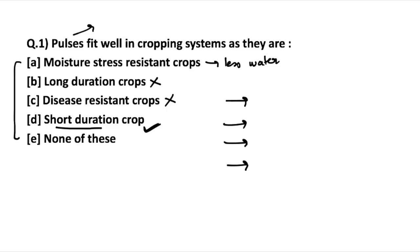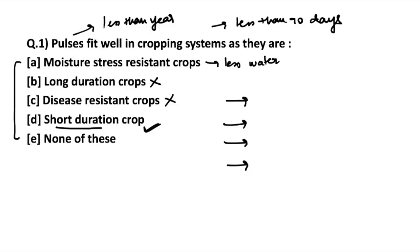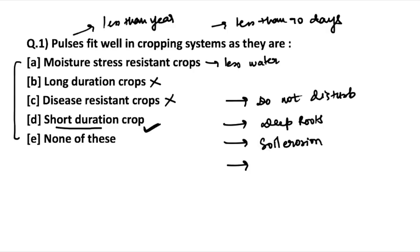What are short duration crops? Basically, those crops which can grow in less than a year are considered short duration crops. Pulses can be grown in less than 90 days — you could say they are super short duration crops. Other features of pulses include: they do not disturb the main crop when intercropped, they have deep roots which open up the soil for better aeration, they provide protective ground cover making them soil erosion resistant, and of course they are short duration crops. Because of these features, pulses fit well in cropping systems.